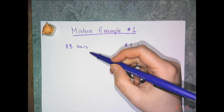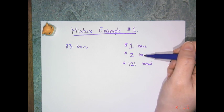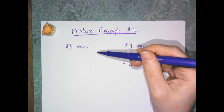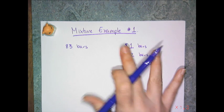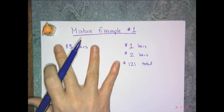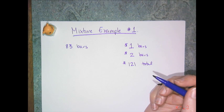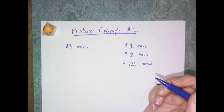I know that I have 83 bars in total, and that there were some $1 bars, some $2 bars, and $121 was brought in all together. And notice how I separated out my two types of information by the units. So this is all information on money, and this is all information on number of bars, and that's why it's important to look at the units in your problem, because it'll help you figure out what type of equations you need.